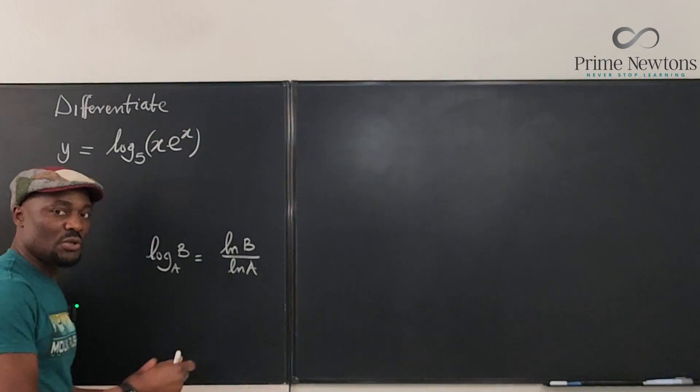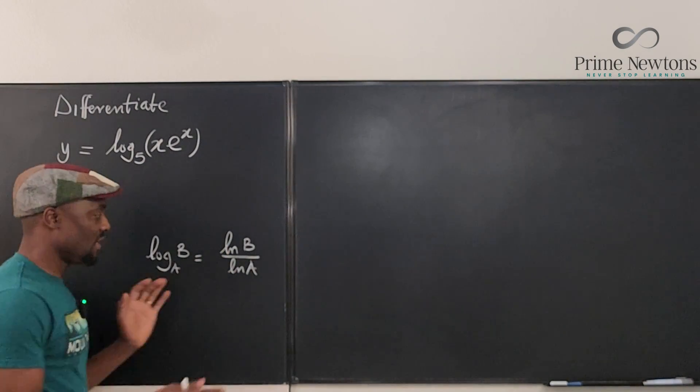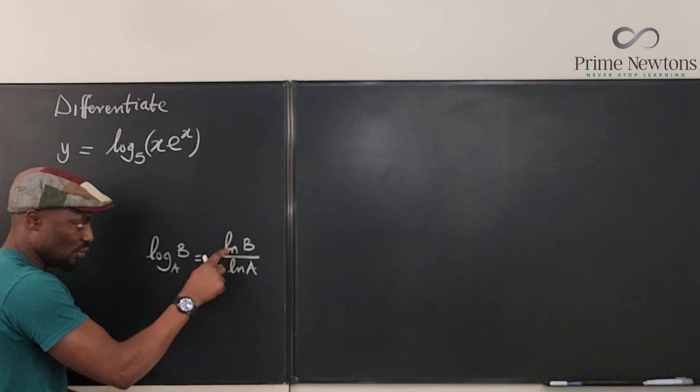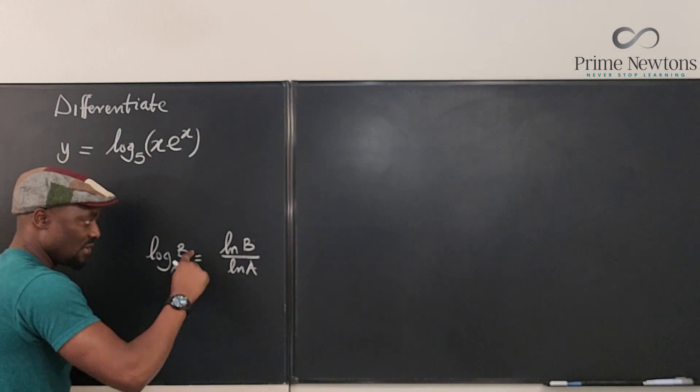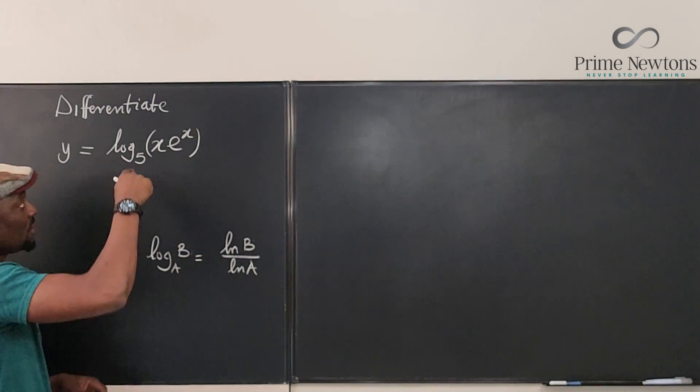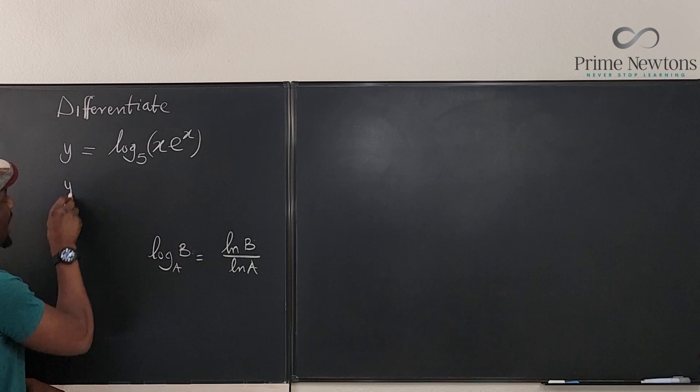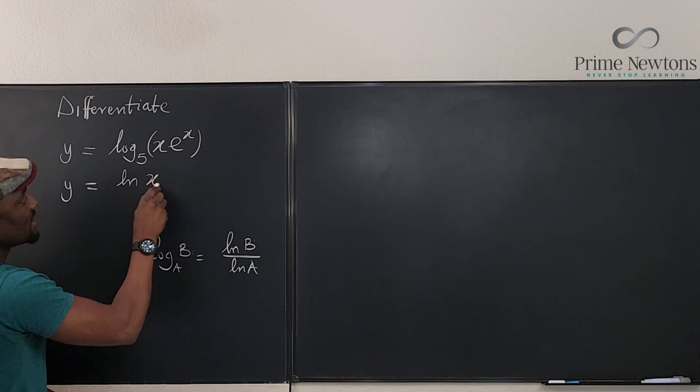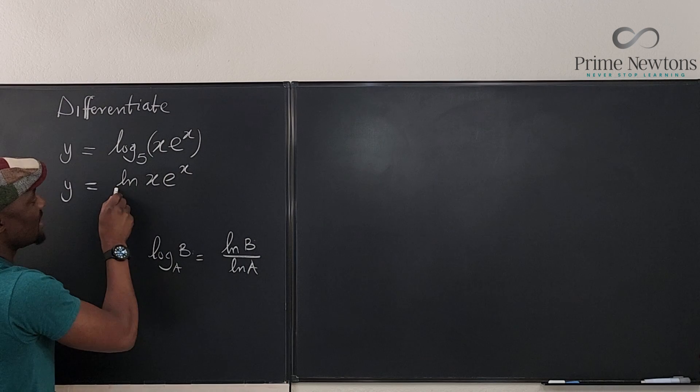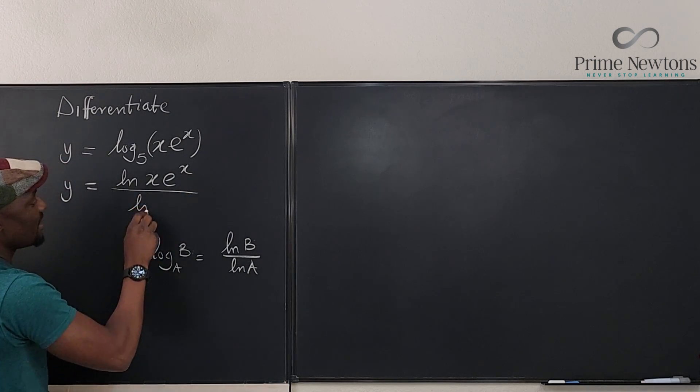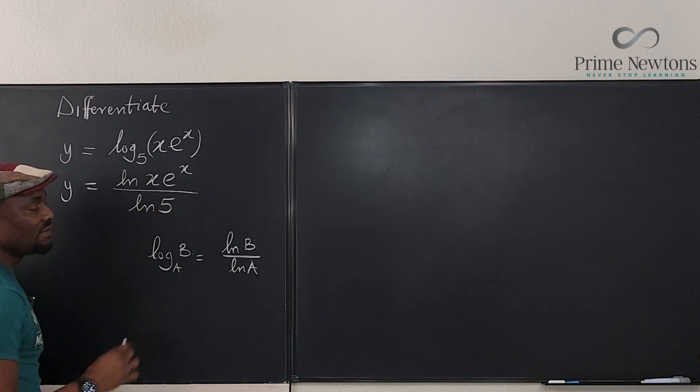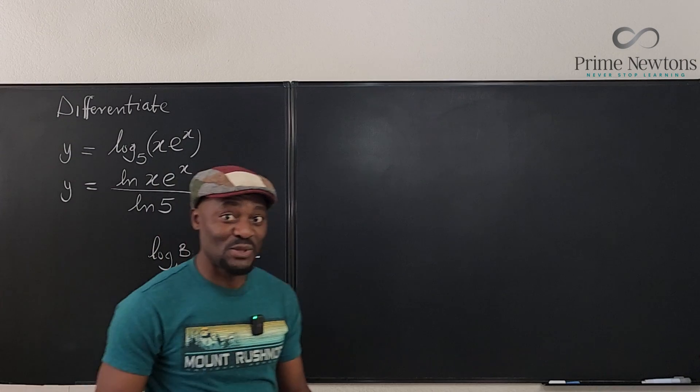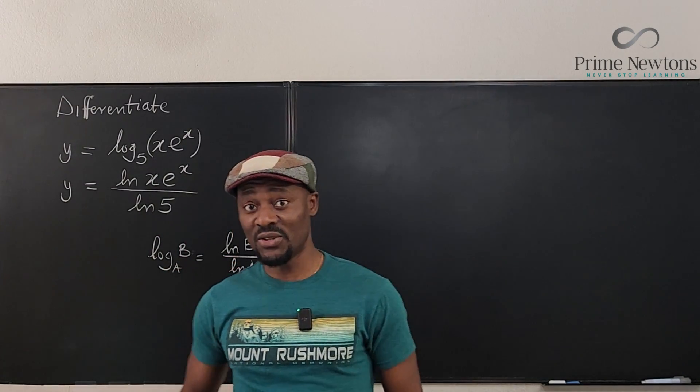Now, you could choose natural log, you could choose log to another base, it doesn't matter. But you can convert, just choose a common base and put this on top and put this under. That's what we're going to do here. So we're going to say y is equal to the natural log of xe to the x divided by the natural log of five. And this becomes a lot easier for you to do your calculus on.